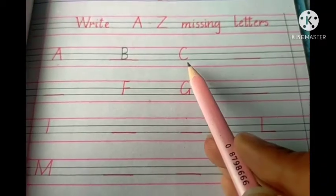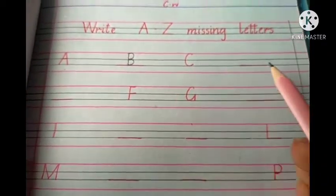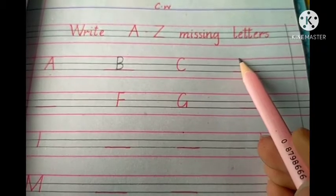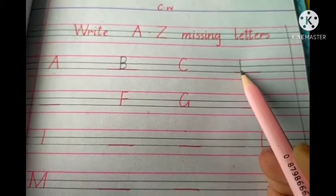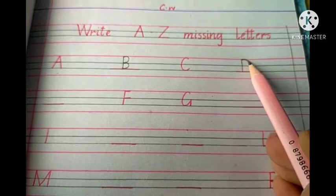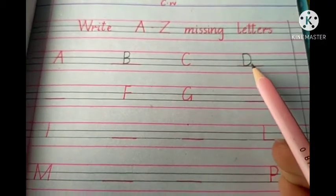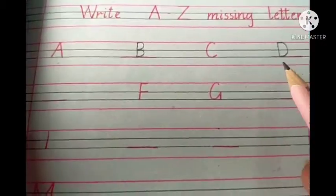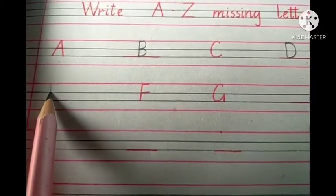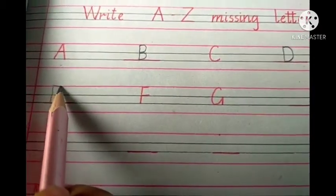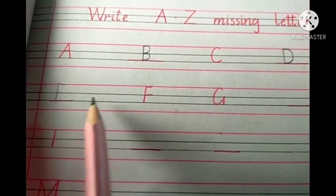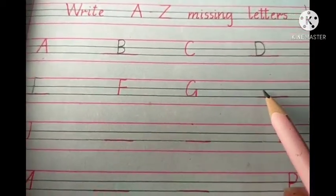What comes after B? C. What comes after C? D. First, you make a straight standing line in the first three lines, then close it by a half circle. Like this. D. What comes after D? E. Make a straight standing line and sleeping lines. What comes after E? F, G, H.